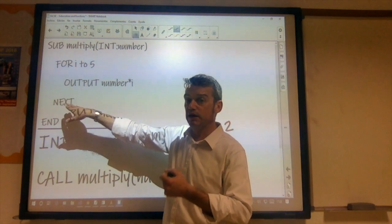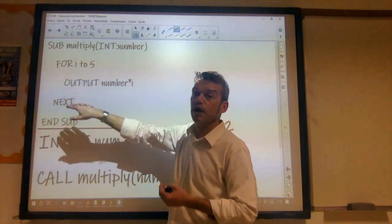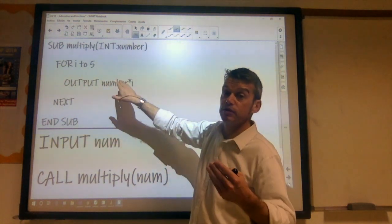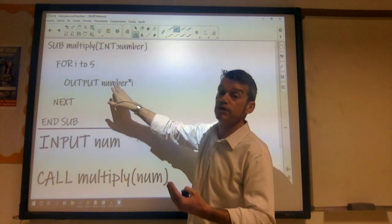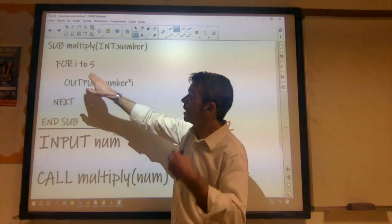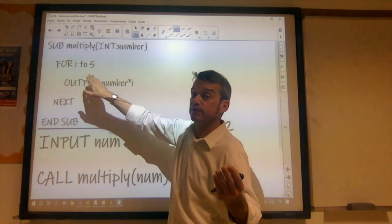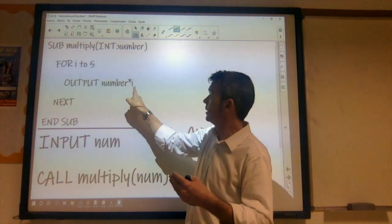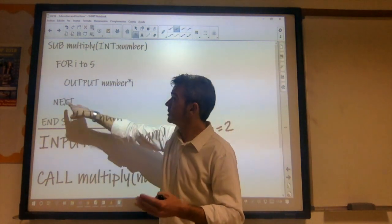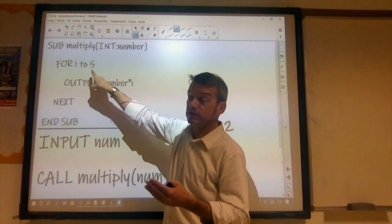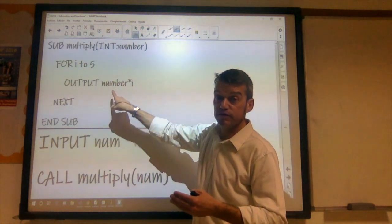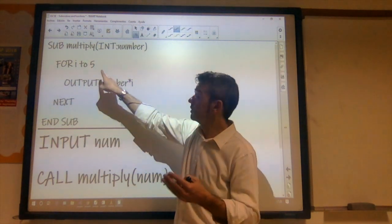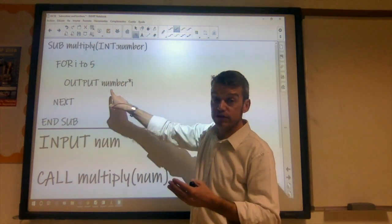We get to the next keyword, so we go back to the for loop. I now has the value 2. So we output 2 times 2. And we output the result. And we get back around. I now takes the value 3. Output 2 by 3. Gets the next. I now takes the value 4. And we output the result of that multiplication. Next, I takes the value 5. We output the result of that multiplication.